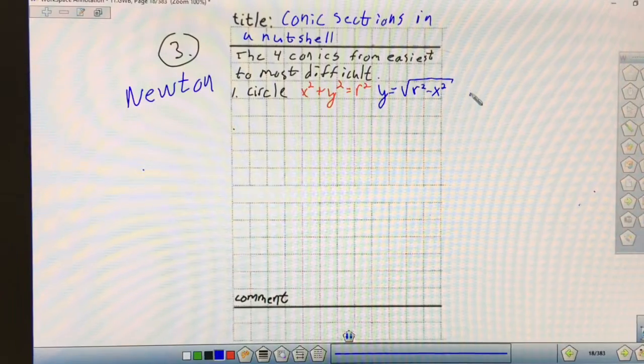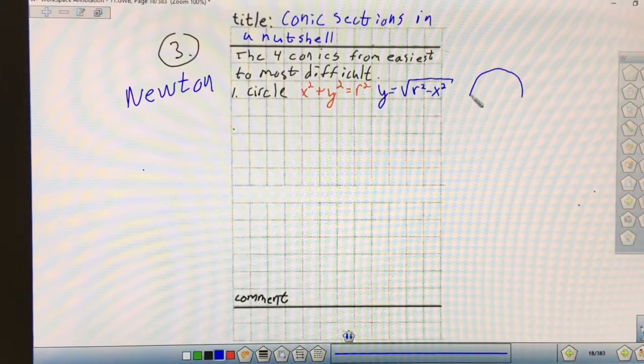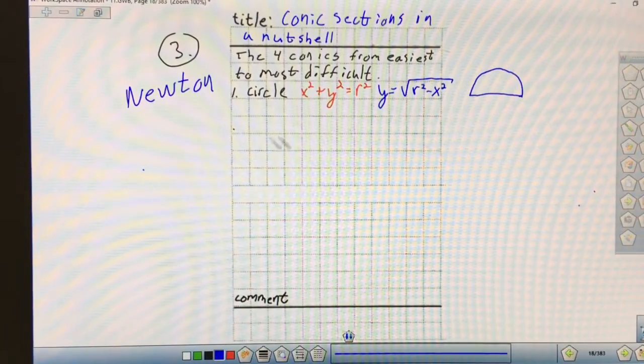The calculus equation for that would actually be Y equals the square root of R squared minus X squared. In calculus, we usually only deal with functions, so that would be the top half of a circle, a semicircle.